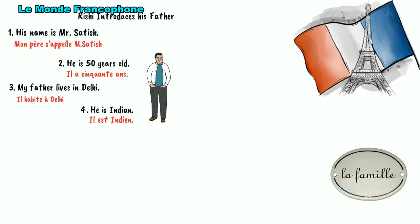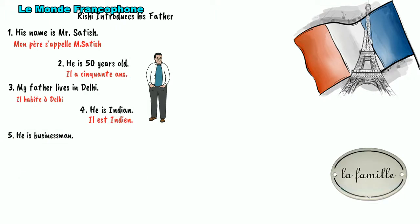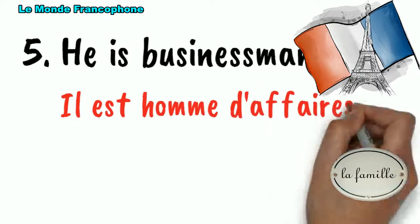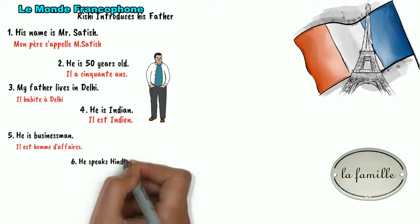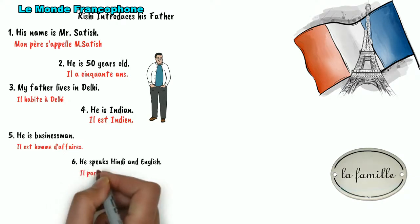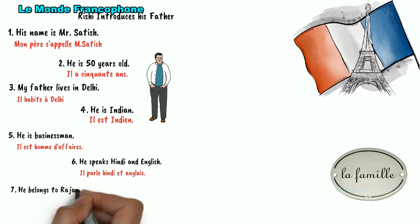Next, he can also talk about the profession of his father. Let's suppose Rishi's father is a businessman. So Rishi would say: My father is a businessman. In French it will be: Il est homme d'affaires. Next, he can talk about the languages that his father speaks — my father speaks Hindi and English. So in French: Il parle Hindi et anglais. And my father comes from, or belongs to, Rajasthan. So: Il vient de Rajasthan.